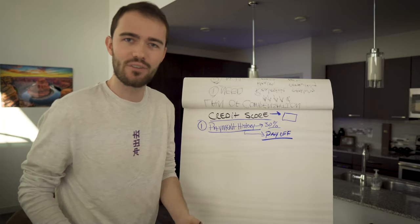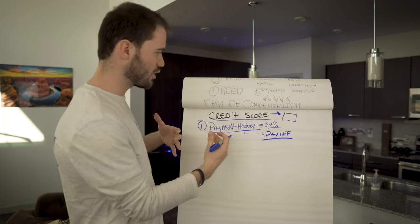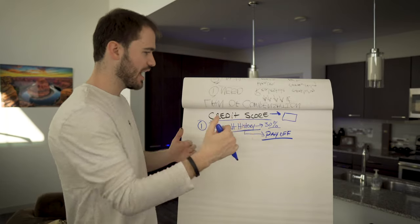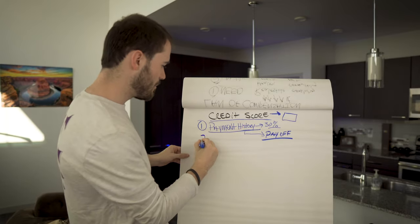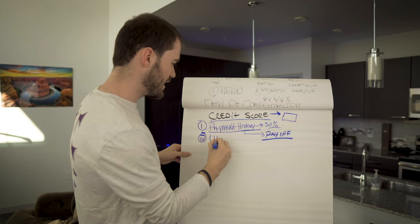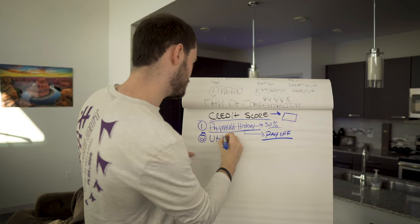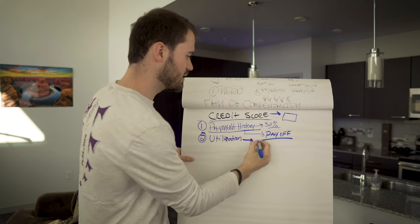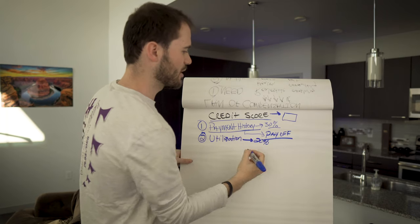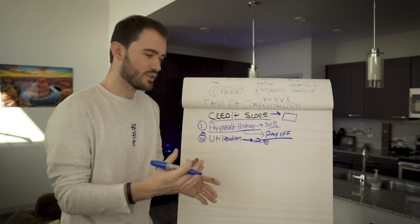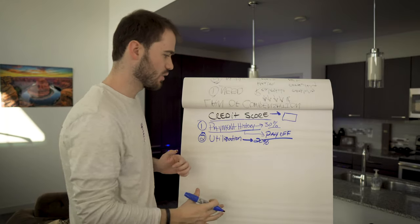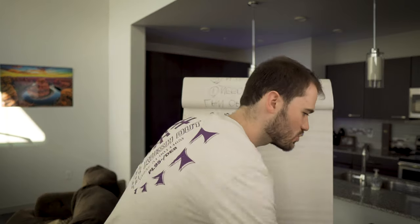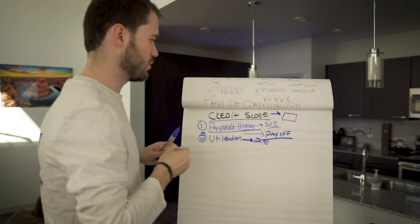Now secondly, when we talk about credit score, when we talk about each element, some of them are not going to have the importance as others. But another one that has a lot of importance is your utilization. Now your utilization typically is around 20%, might be a little bit lower, as far as deciding what your credit score is. But utilization means how much of your credit are you actually using. So I'm going to switch marker colors here real quick.